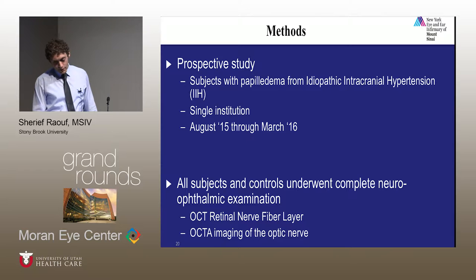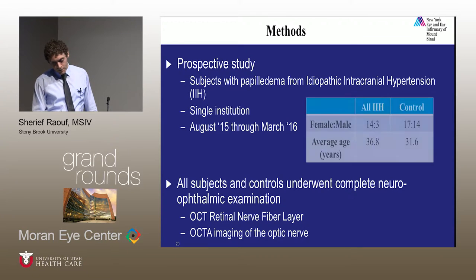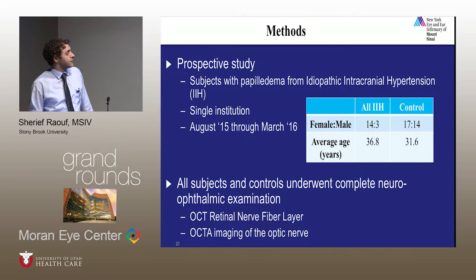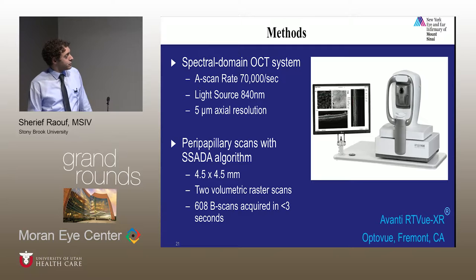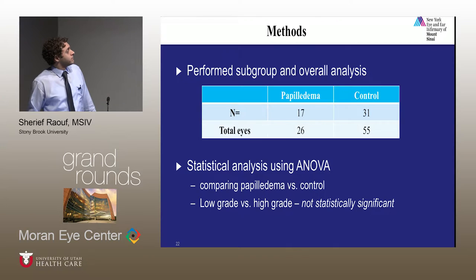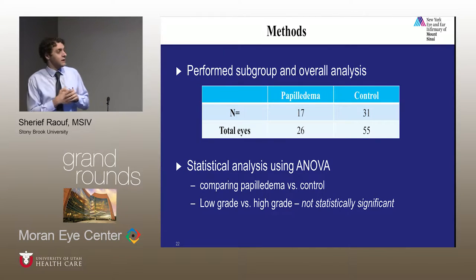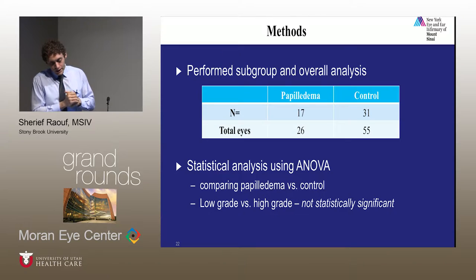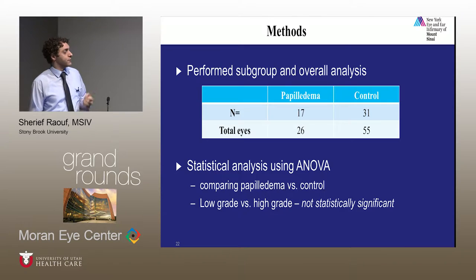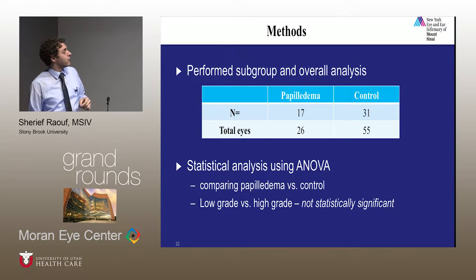All data were collected at the same site. We describe our control and patient numbers and their breakdowns. The parametricity of the data was examined — there were some departures, but not enough to preclude using ANOVA. A comparison was also performed between low and high grade papilledema, which was not found to be statistically significant, so we will limit our remarks to the patient versus control comparison.